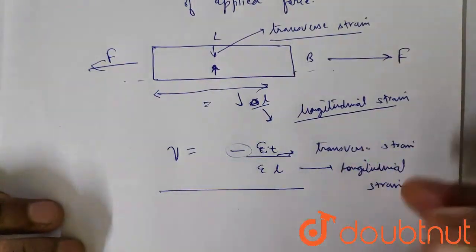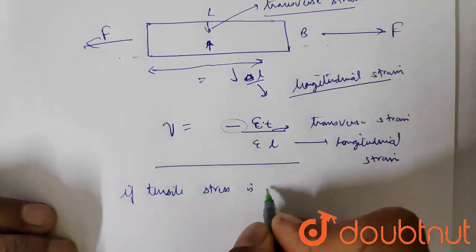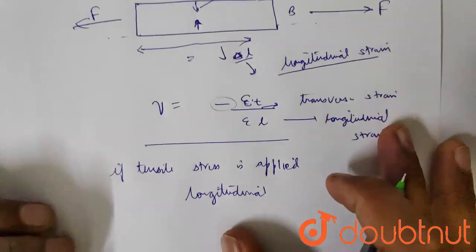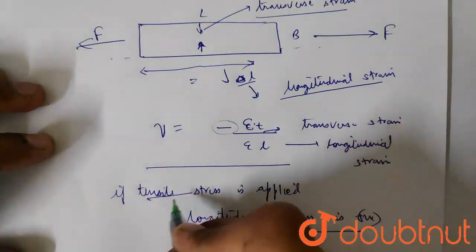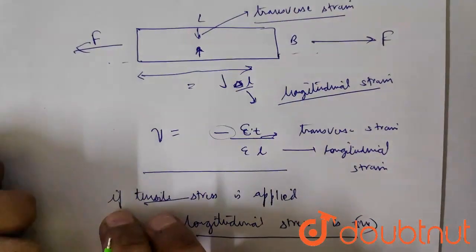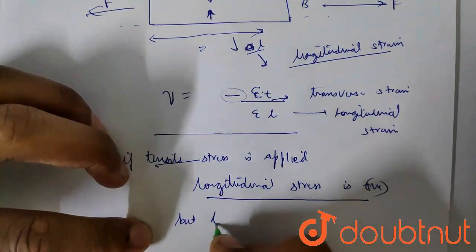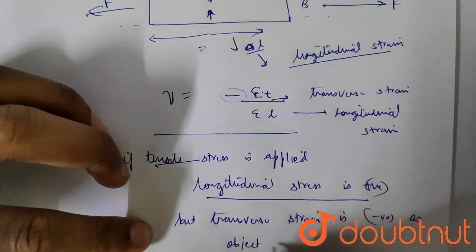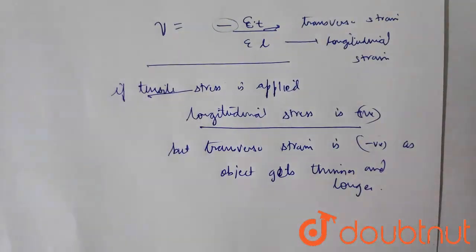Now, why do we have the negative sign? If tensile stress is applied, the longitudinal strain will be positive because the length increases. But the object also gets thinner, so the transverse strain will be negative due to contraction. The transverse strain is negative as objects get thinner and longer when tensile stress is applied.